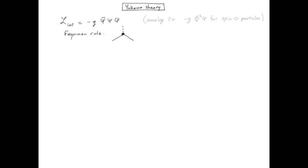So the dashed line represents the scalar boson phi. And in order to distinguish between psi bar and psi, we are going to have an arrow pointing toward the vertex and one pointing outward the vertex. And now the value of the vertex is minus ig.